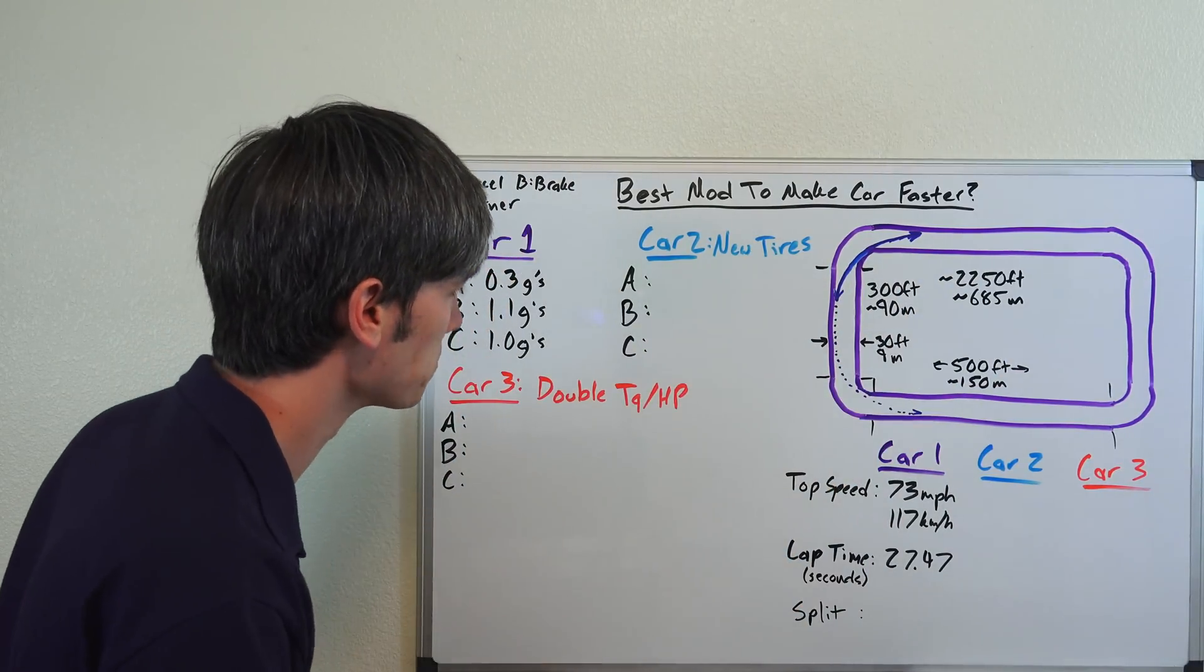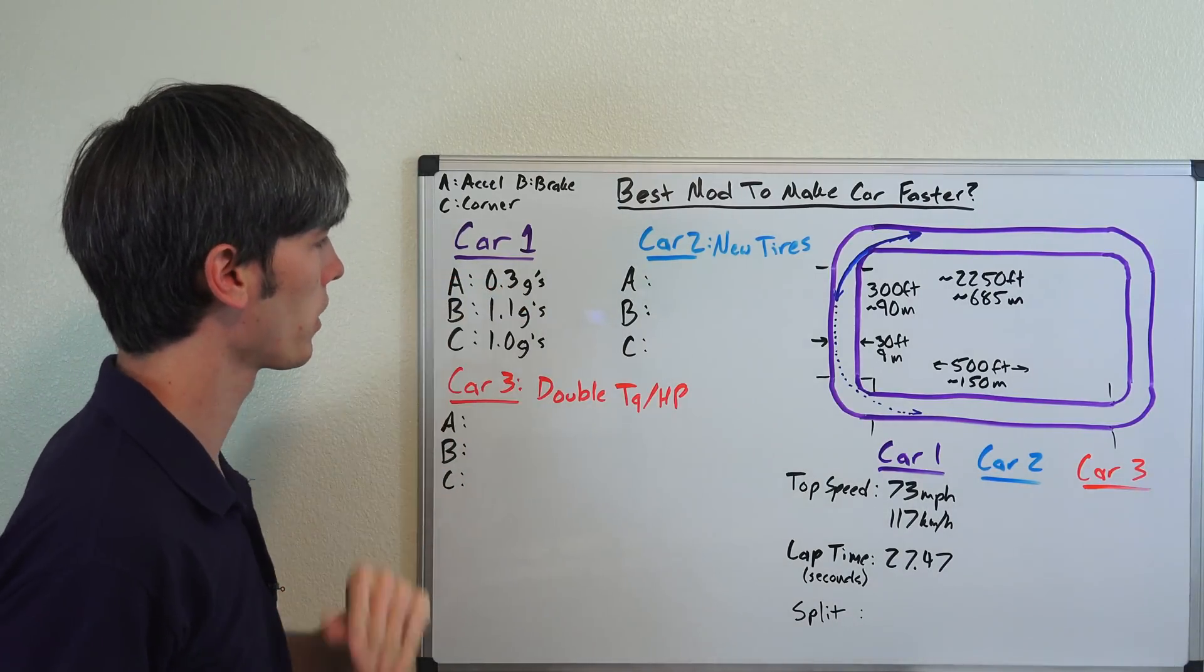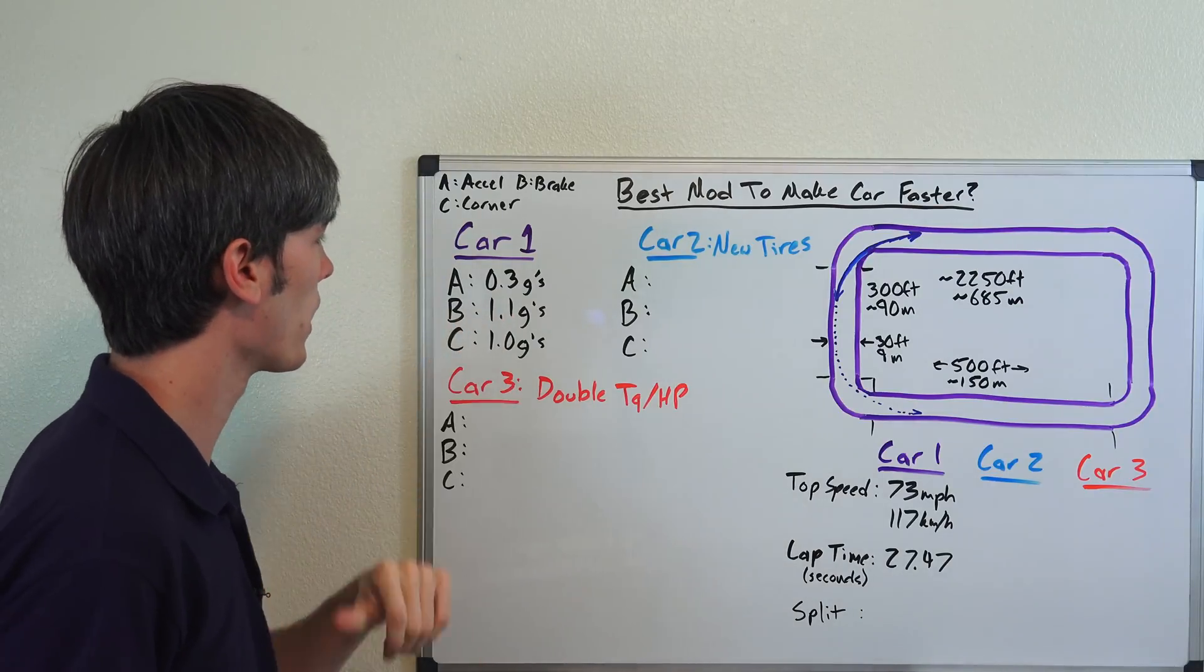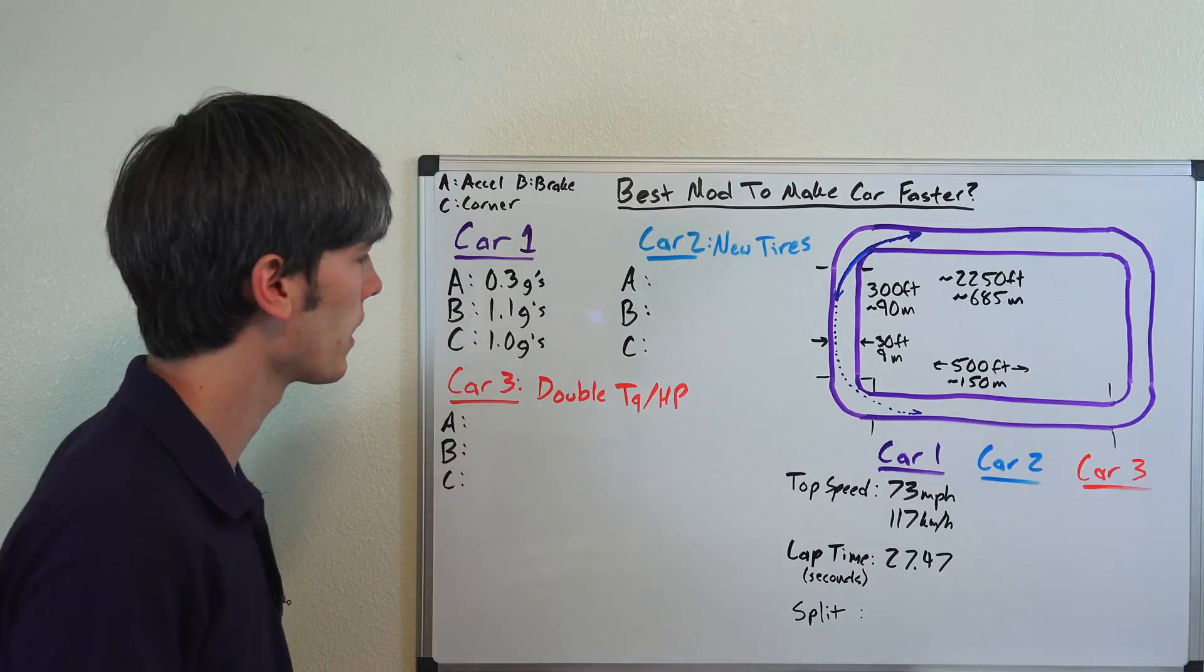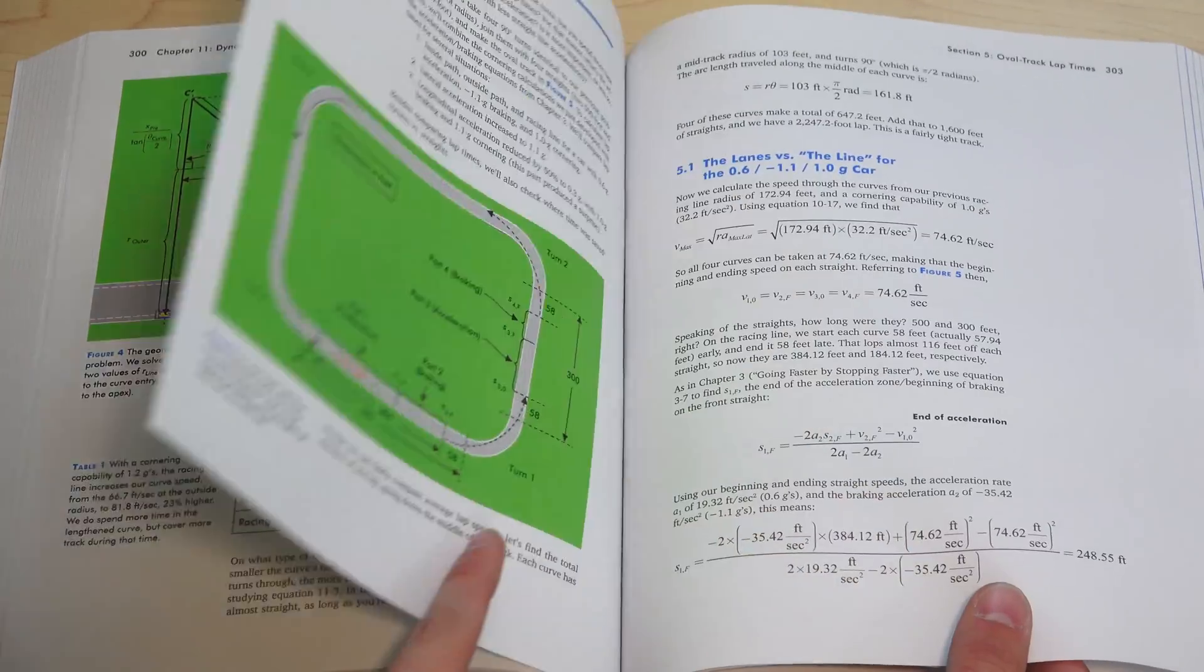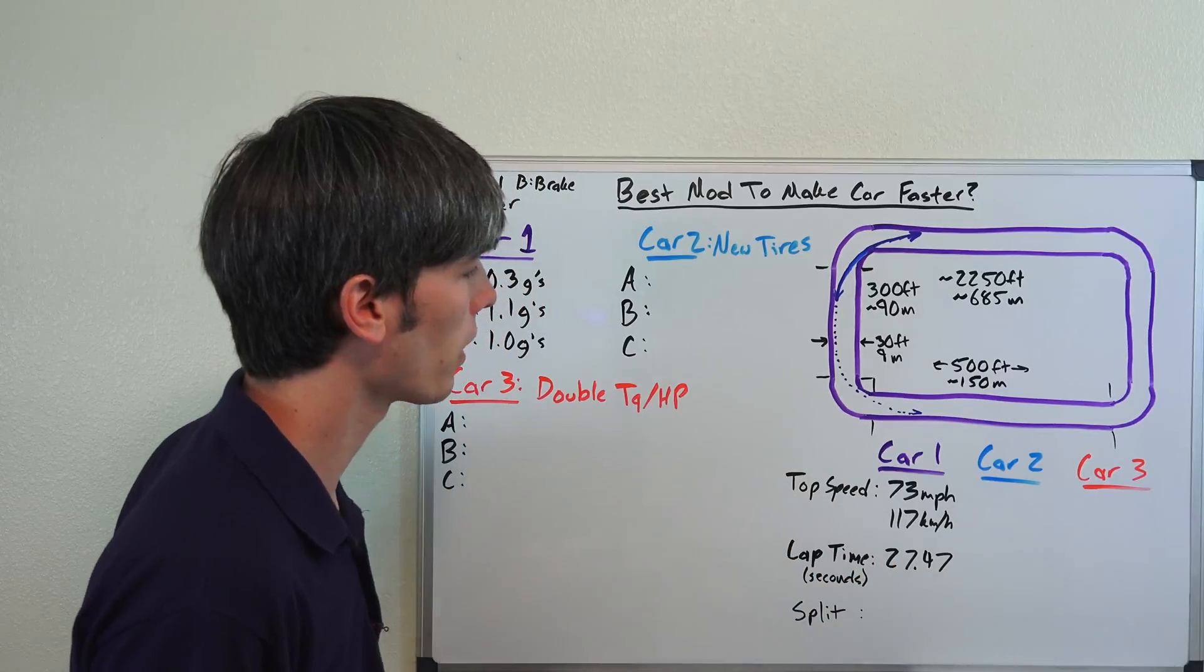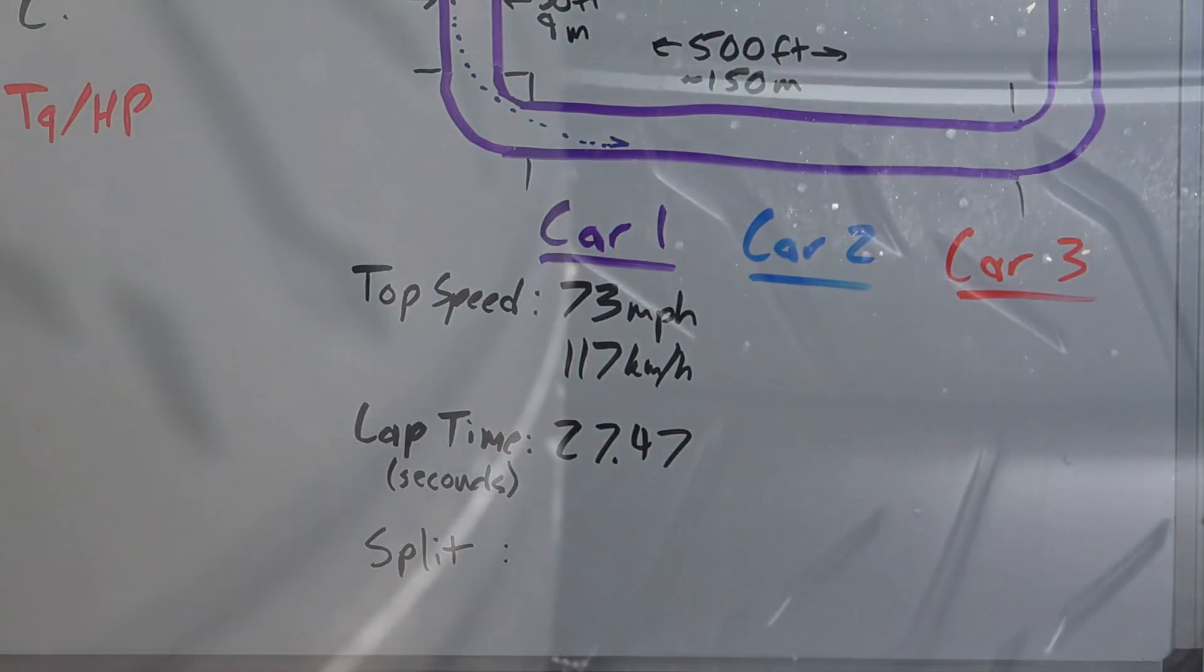Car number one, which is our base car or control, is able to accelerate at 0.3 G's, which isn't all that quick—pretty much any family sedan could probably hit that. It's able to brake at 1.1 G's, which is pretty decent, and corner at 1.0 G's, which is also pretty good. You do all the math and you get the top speed on this straightaway of 73 miles per hour or about 117 kilometers per hour, and the car is able to post a lap time of 27.47 seconds.